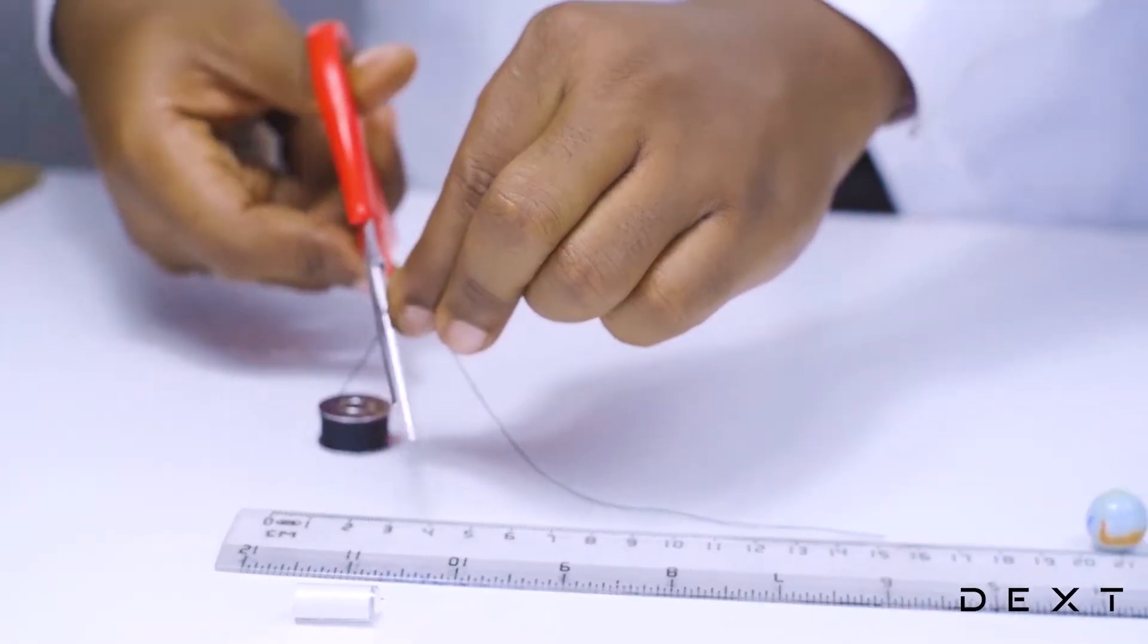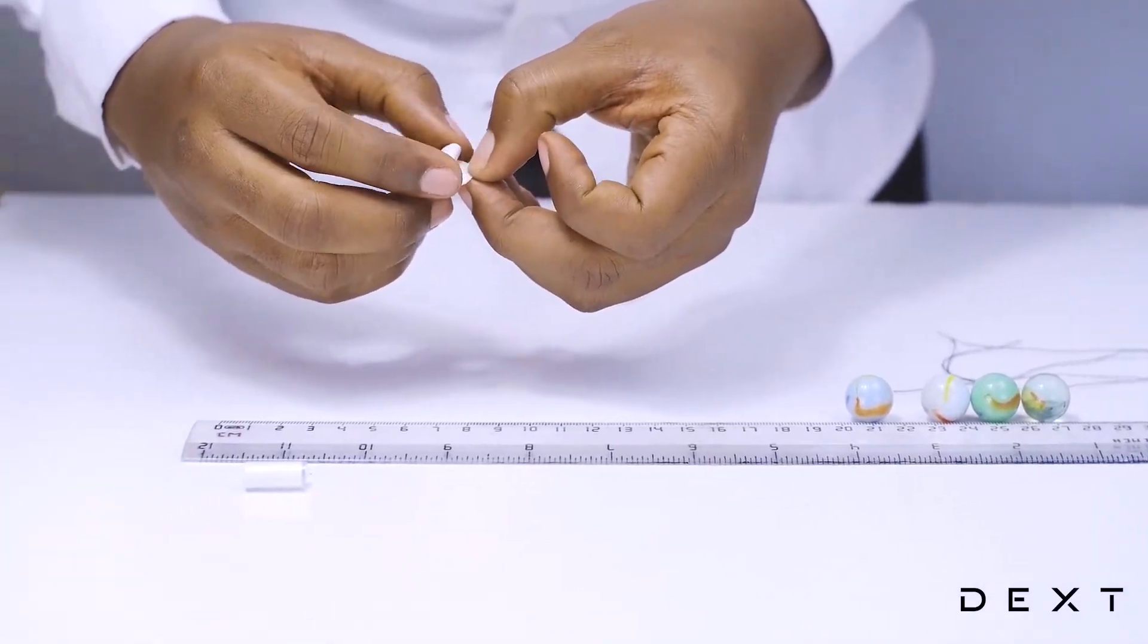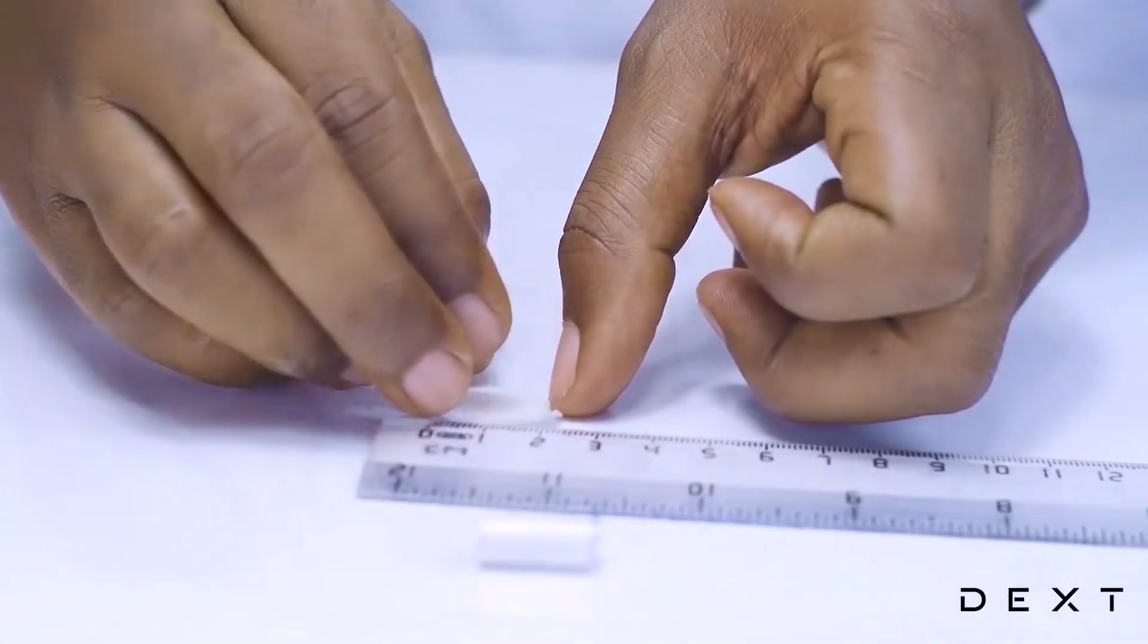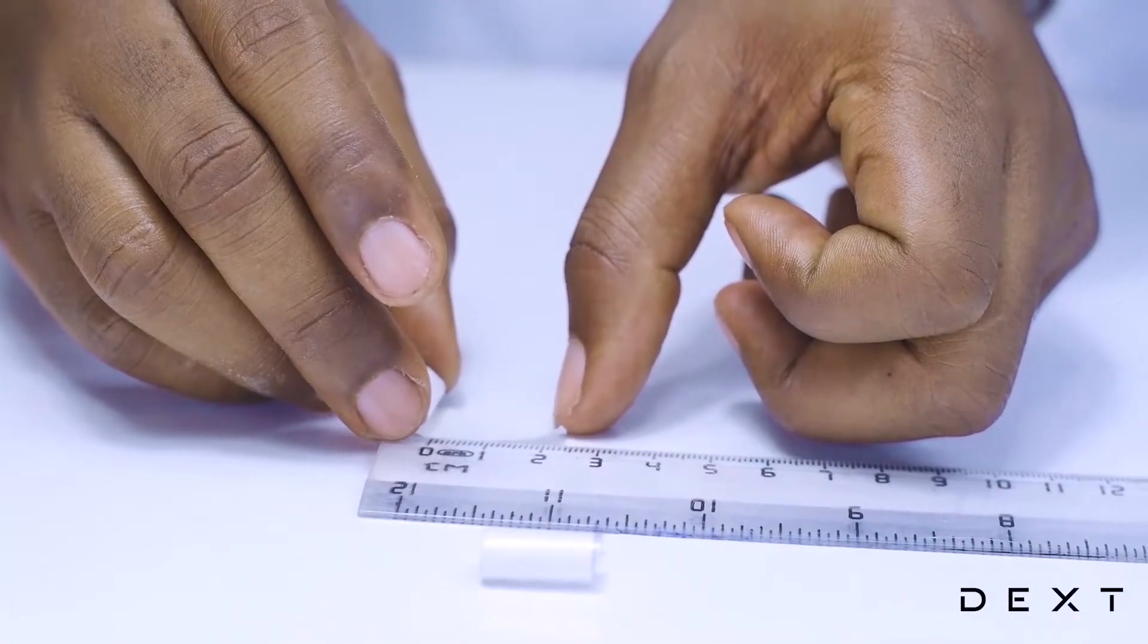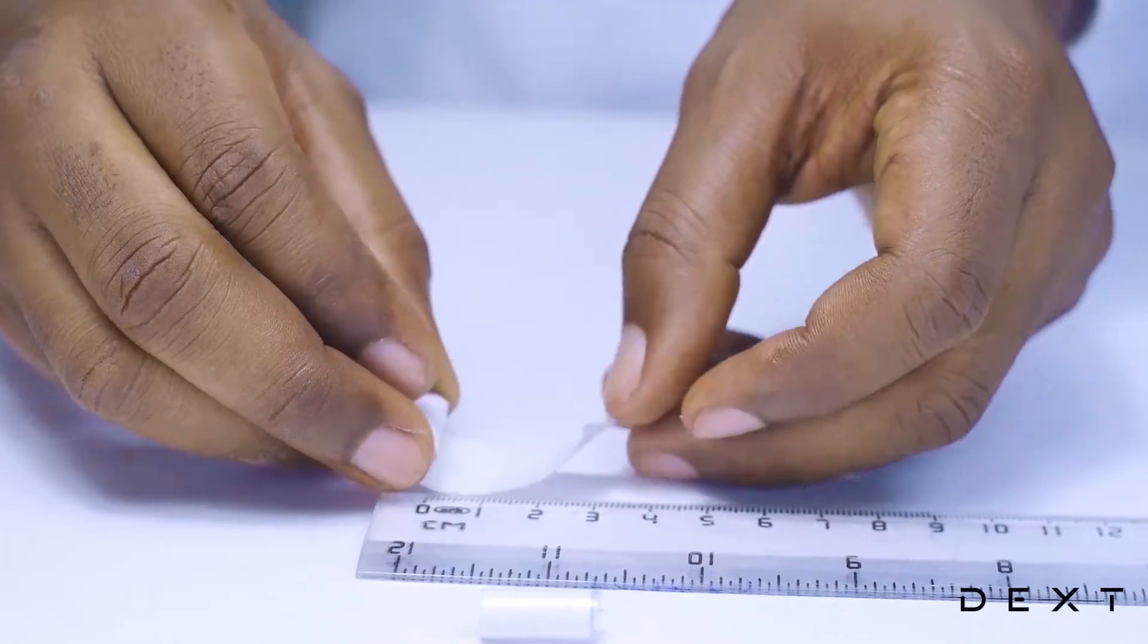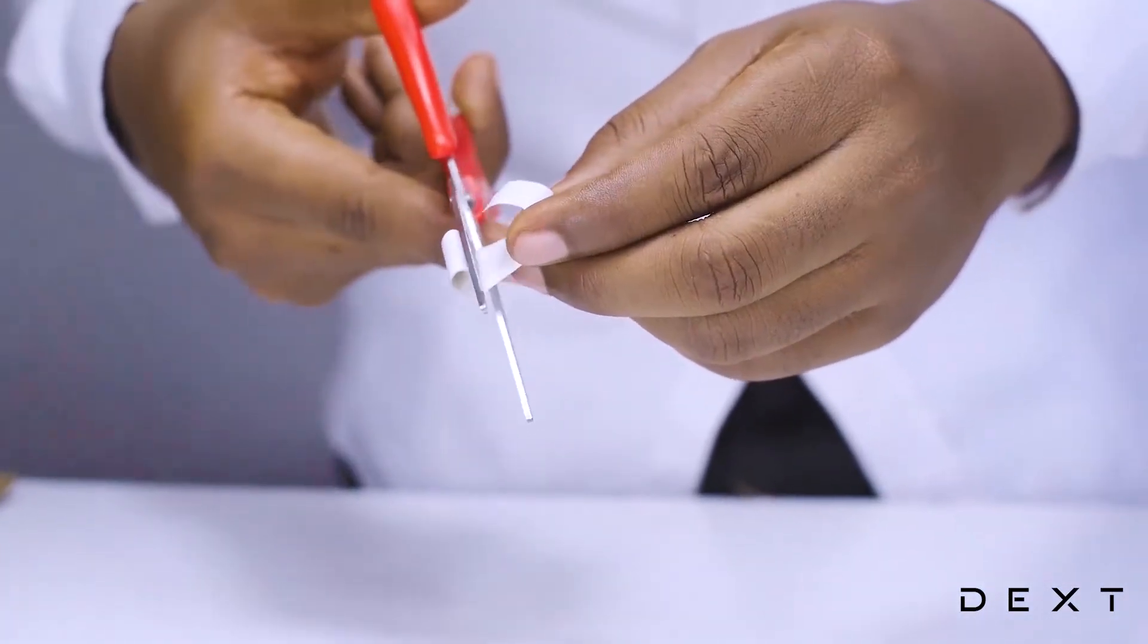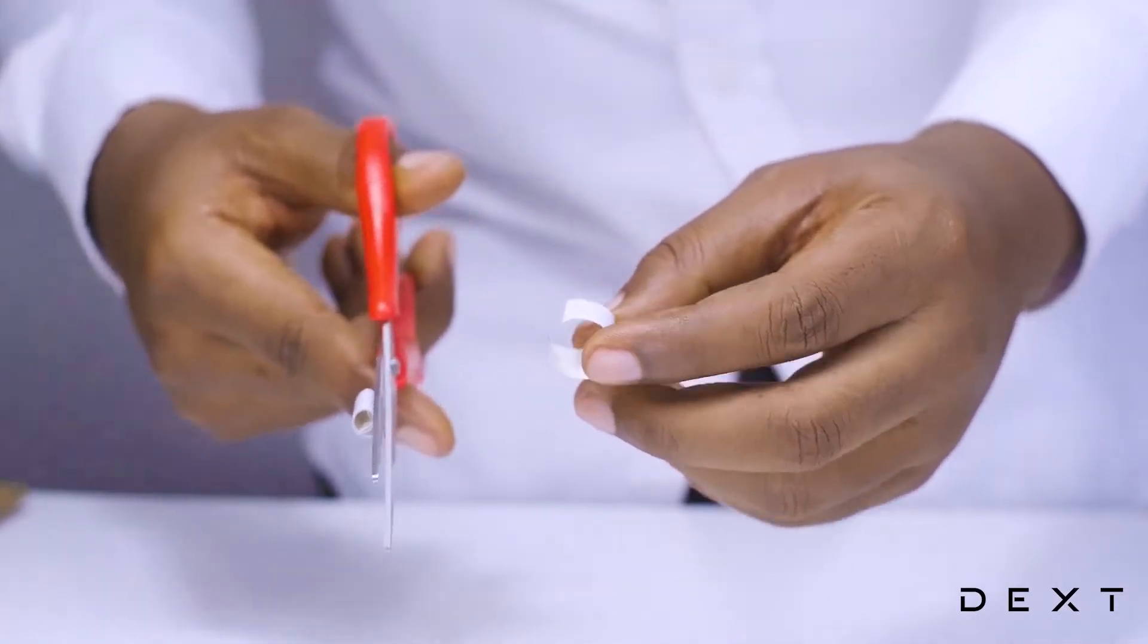The next thing we are going to do is to cut some double sided tape. We are going to cut 3 cm of double sided tape. Again, we are going to cut 4 of these so that each marble will have some double sided tape and a string.